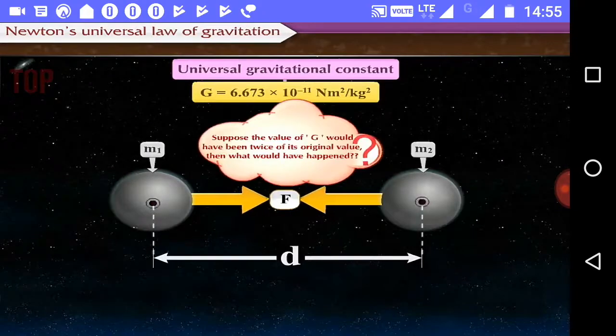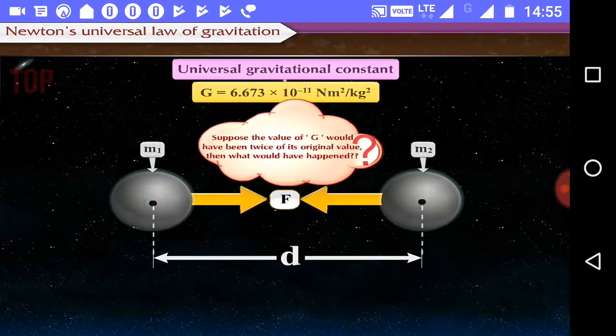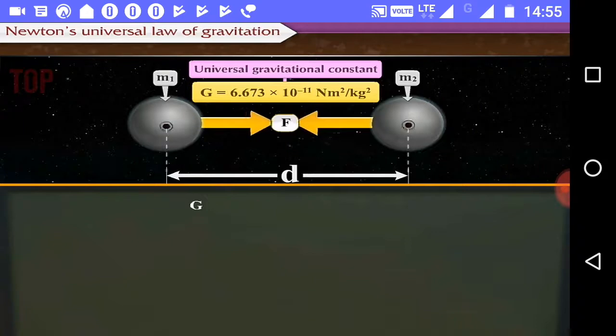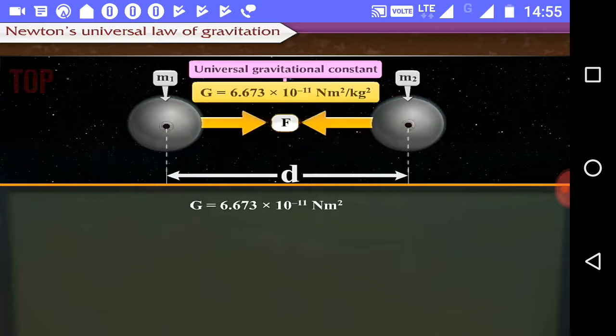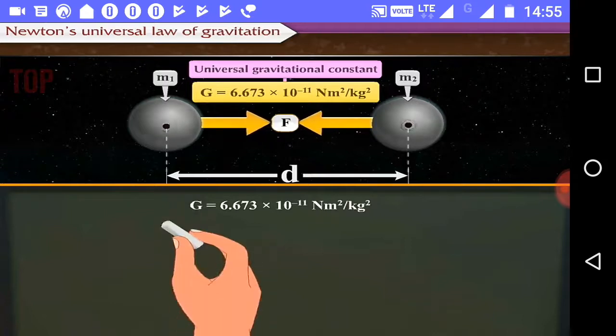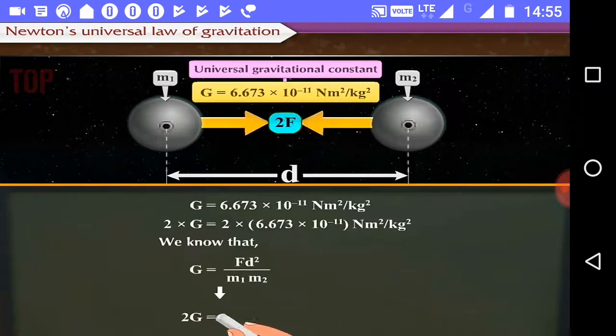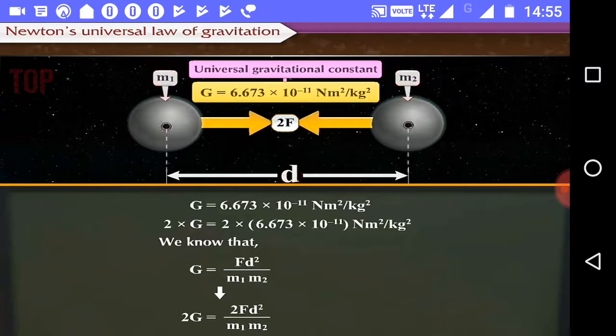Suppose the value of G would have been twice of its original value. Then what would have happened? If the value of G would have been twice of 6.673 into 10 raised to minus 11 Newton meter square per kilogram square, then the gravitational force would have been doubled, provided the masses of two objects and the distance between them is constant.